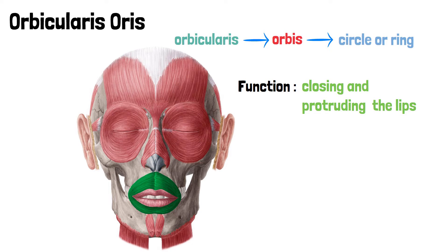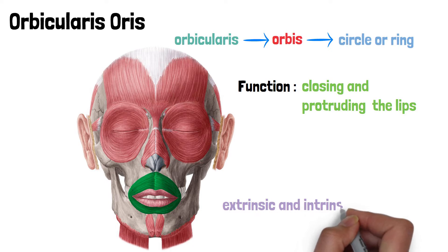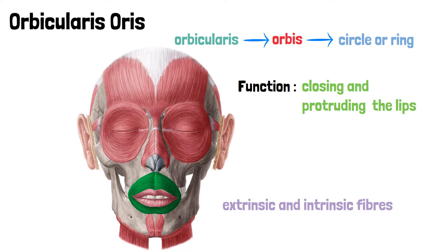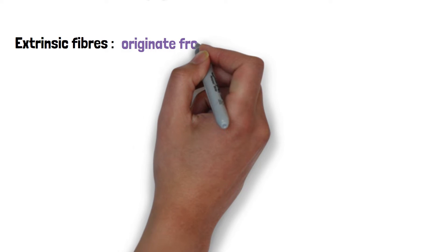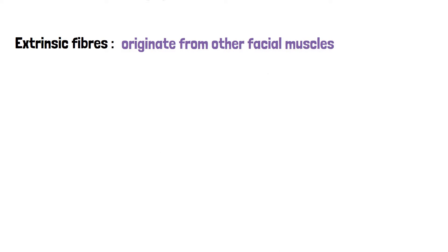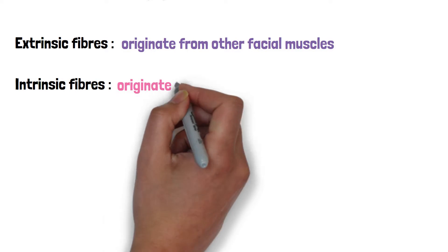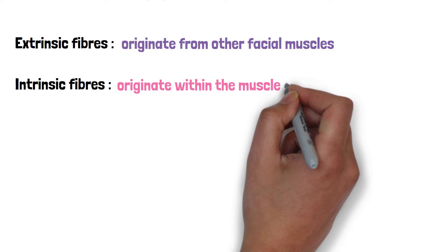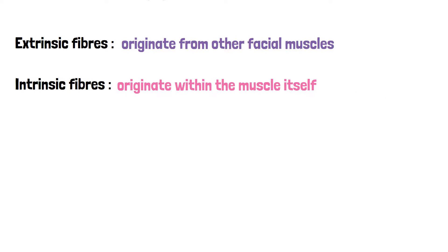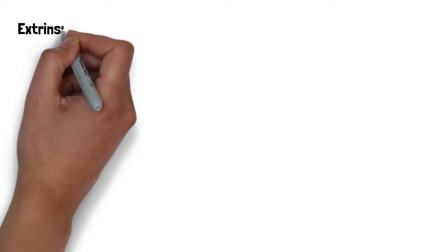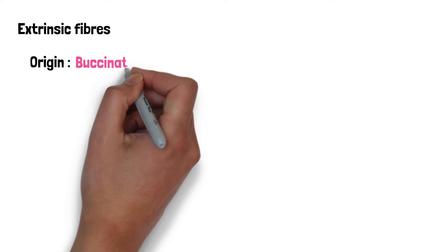The orbicularis oris muscle has two types of fibers: the extrinsic fibers and the intrinsic fibers. The extrinsic fibers originate from the other facial muscles, while the intrinsic fibers originate within the muscle itself. Extrinsic fibers originate from the buccinator muscle and aid in actions like blowing.